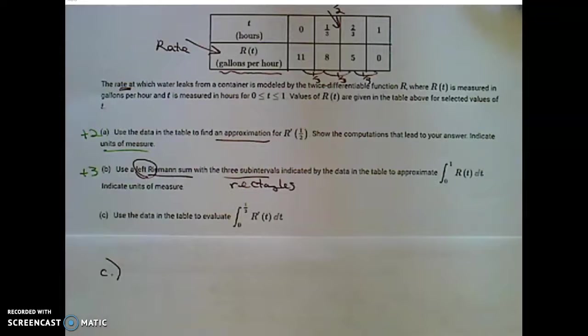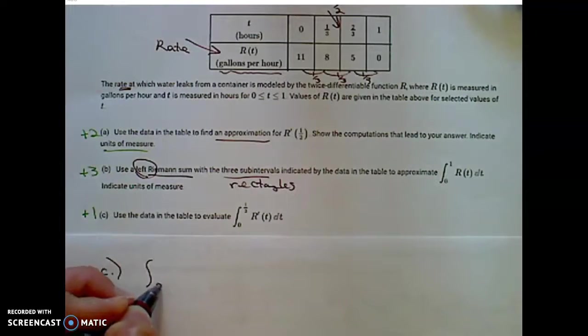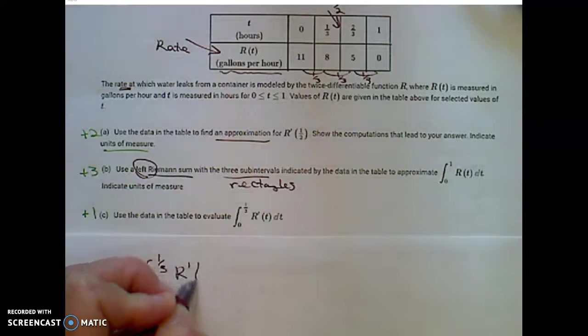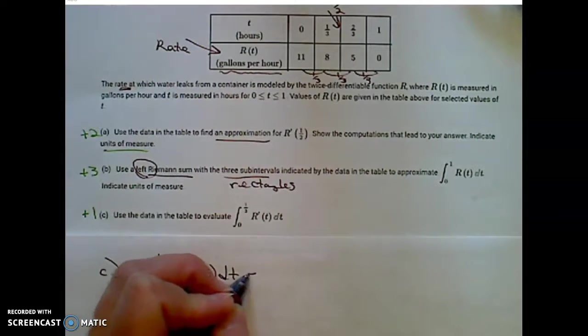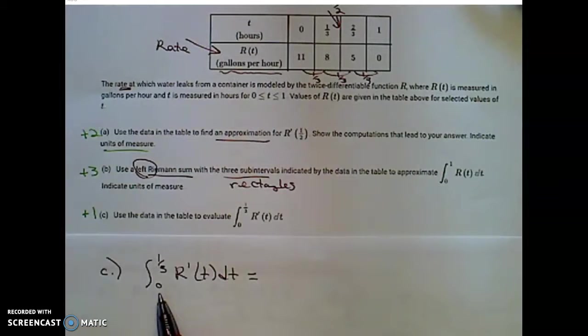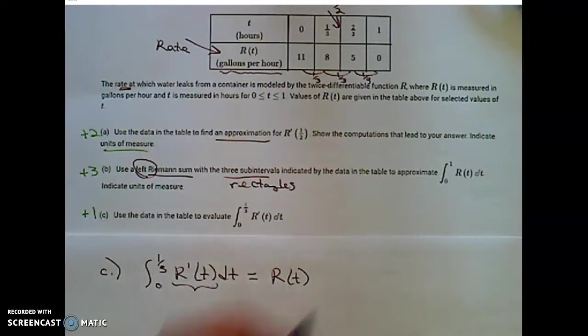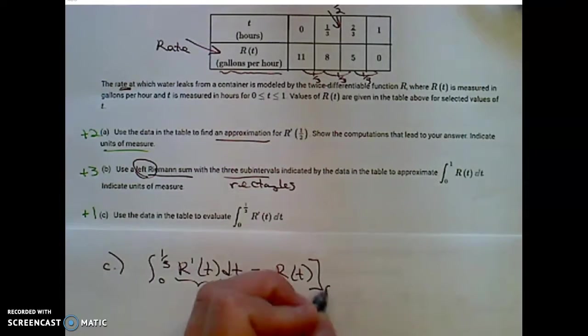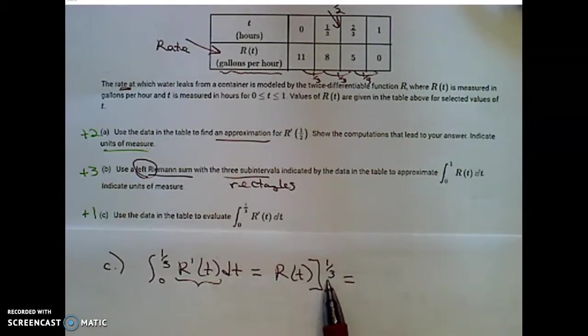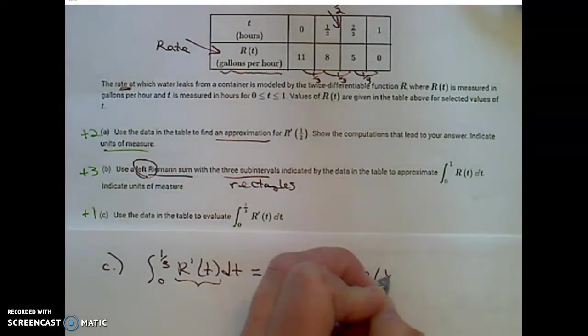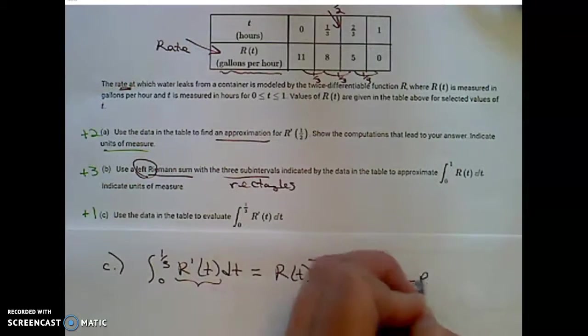Carefully read part C. Part C is only a one part portion of this problem. Use the data in the table again to evaluate the integral from 0 to 1 third of R prime of t dt. Remember to evaluate a definite integral, we take the antiderivative of this. The antiderivative of the derivative is simply R of t, the function itself. And we're going to evaluate that from 0 to 1 third. Larger one, start with the upper, which is R of 1 third, minus that lower bound, R of 0.